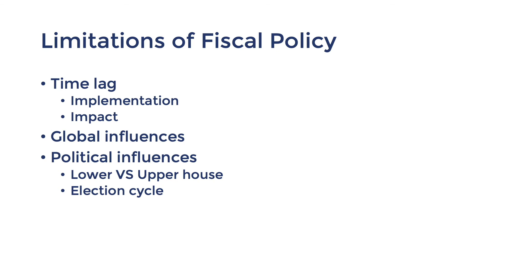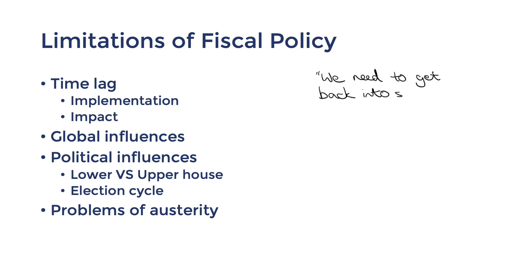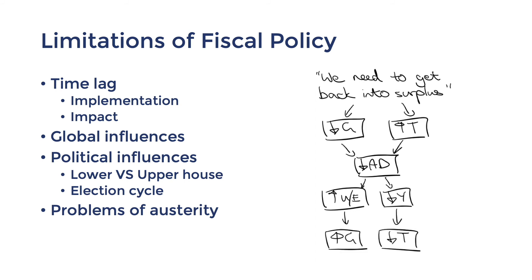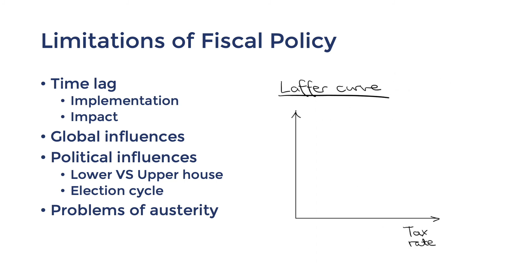A common problem with austerity measures — measures with contractionary impacts on the economy — is that with a global slowdown, Australia was already facing reduced aggregate demand. To reach a budget surplus, fiscal policy would need to take on a contractionary stance, reducing spending, increasing taxes, and further reducing aggregate demand. As a result, unemployment increases and incomes fall, meaning automatic stabilizers kick in and the government ends up spending even more and collecting less tax revenue. Their austerity measures become counterproductive. This is one of the rationales behind the Laffer curve, which theorizes that making tax rates too high will actually lead to less total tax revenue collected.